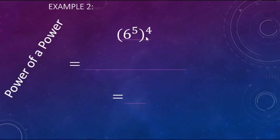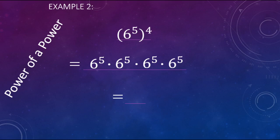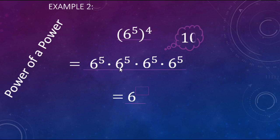Here we have 6 to the 5th to the 4th power. So we're going to have 4 copies of 6 to the 5th being multiplied together: 1 six to the 5th, times another 6 to the 5th, times a 3rd 6 to the 5th, times a 4th 6 to the 5th. That's going to be 6 to some power. Each group gives us 5 sixes, so we have 5, 10, 15, 20 sixes being multiplied — 6 to the 20th power.